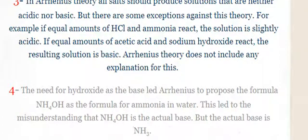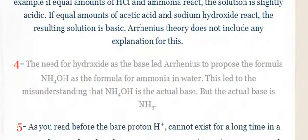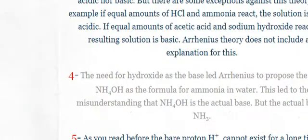Limitation number four: the need for a hydroxide as the base led Arrhenius to propose the formula NH4OH as the formula for ammonia in water. This led to the misunderstanding that ammonium hydroxide is the actual base, but the actual base is ammonia.